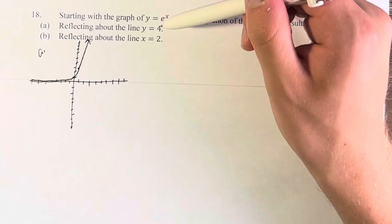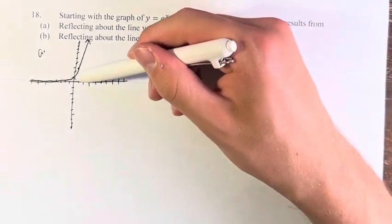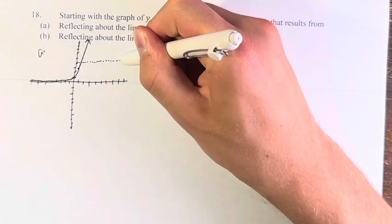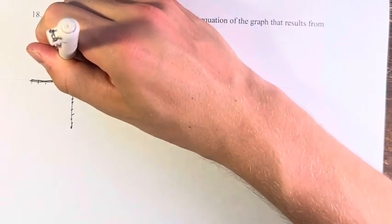What we're going to do is we're going to reflect about the line y equals 4. So y equals 1, 2, 3, 4. This horizontal line we have to reflect across. Now, how do we do this?